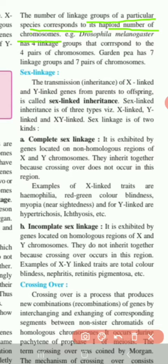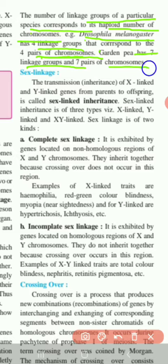Any linkage group of any species depends on its haploid number of chromosomes, i.e., one set of chromosomes. For example, Drosophila melanogaster has four linkage groups corresponding to its four pairs of chromosomes. Garden pea has seven linkage groups and seven pairs of chromosomes.